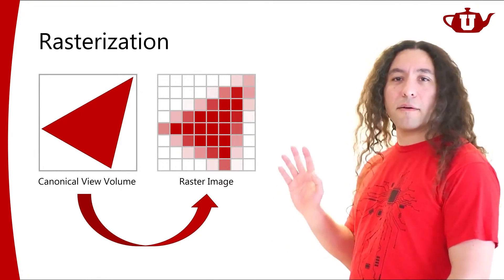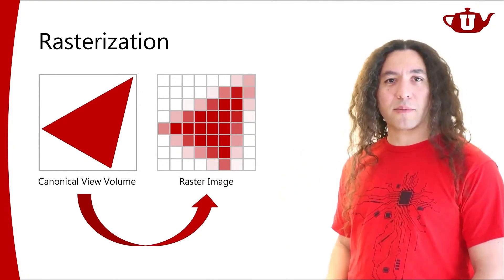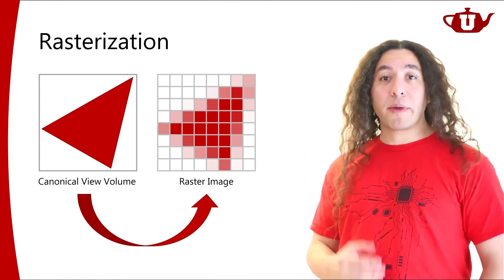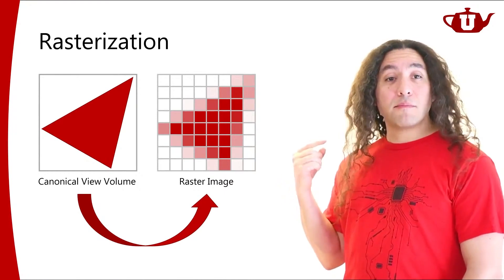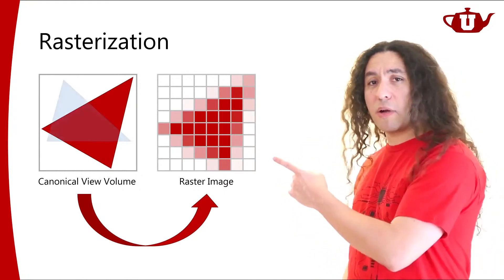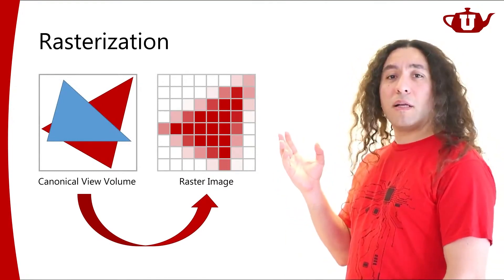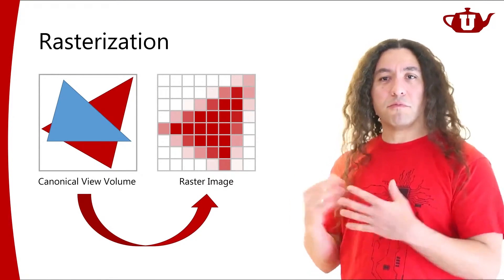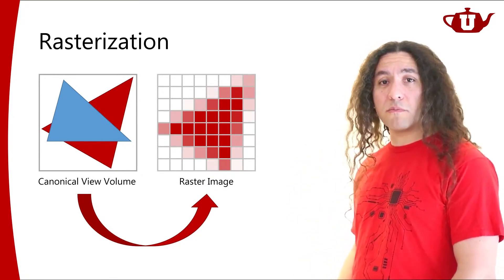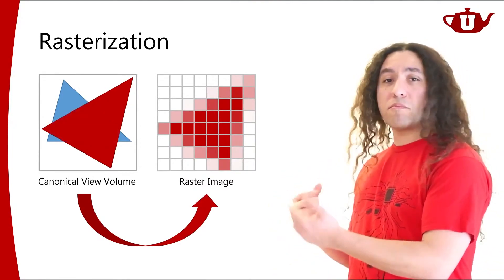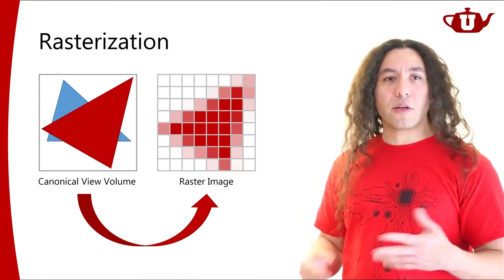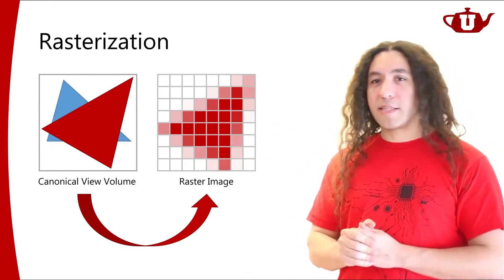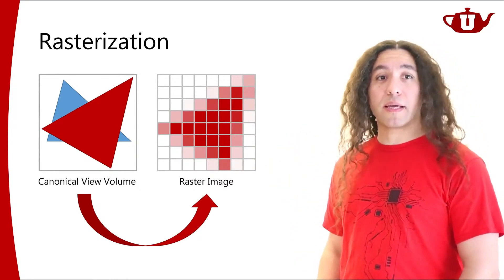Anti-aliasing comes from signal processing, but in computer graphics you can think of it as computing a better approximation of what percentage of a pixel is covered by our objects. One of the biggest problems rasterization-based renderers deal with is what we call visibility: if I have more than one triangle, I need to figure out which triangle is in front of the other. Figuring that out is one of the important difficulties rasterization-based renderers face.